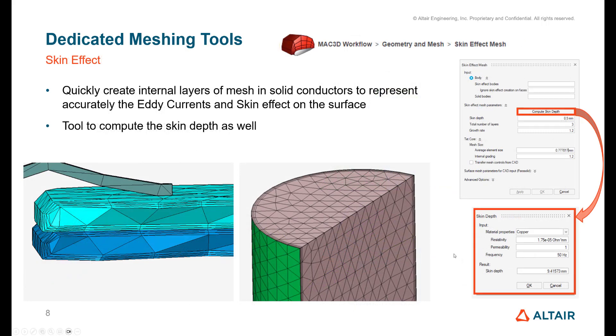Then we have something very specific to meshing which is skin effect. For that aspect there are already many tools in SimLab, but now in this version we introduced this skin effect tool. Very quickly you can create internal layers of mesh in solid conductors to make sure to take into account the proximity losses and eddy currents. You can directly select some bodies, compute the skin depth with a little tool, and make sure you mesh the inside with bigger elements and very thin layers on the outside.